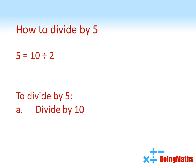So to divide by 5, we'd first divide by 10. Now because we've divided by a bit too much there, we're going to multiply that result by 2 to give us our final answer.